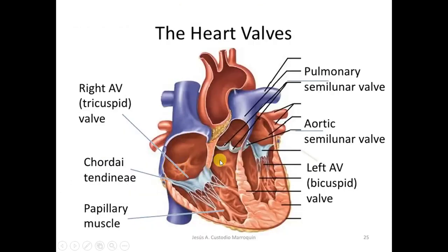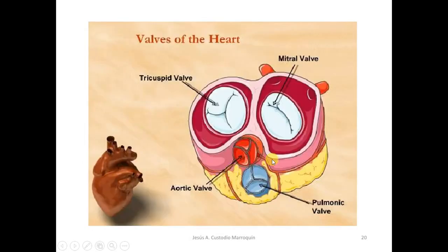Here are shown the valves of the heart. You can see the tricuspid valve between the right atrium and right ventricle, the bicuspid mitral valve between the left atrium and left ventricle, the aortic semilunar valve between the aorta and the left ventricle, and the pulmonary valve.